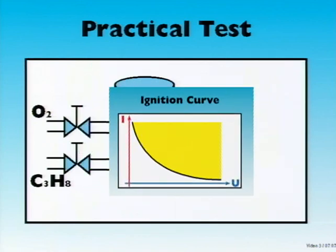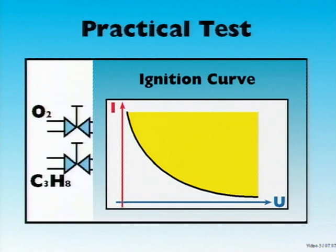The mixture-specific ignition curve is shown in a voltage current diagram. It shows the danger areas.